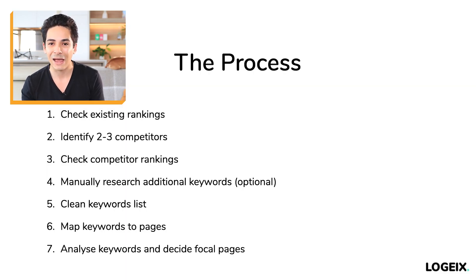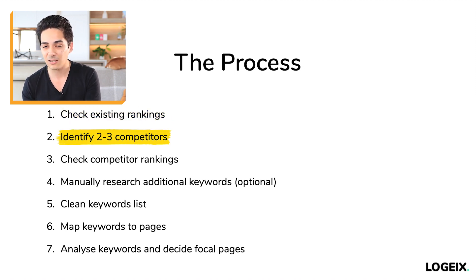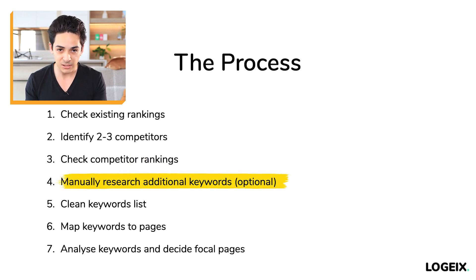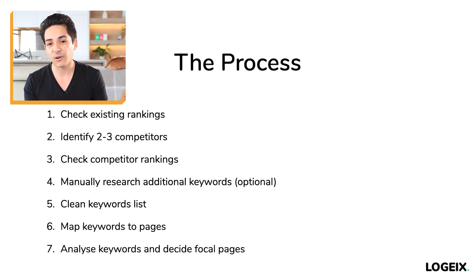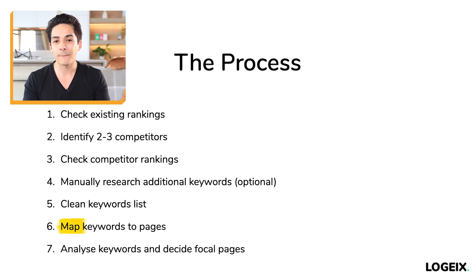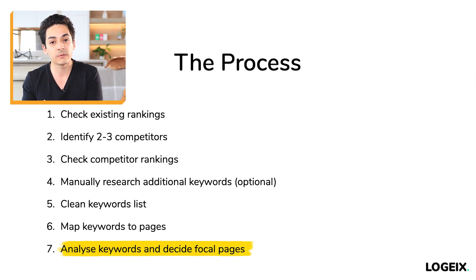The first thing I want to do is recap where exactly we're at. If you remember back to the seven-step process, so far we have: number one, we checked and downloaded our existing rankings. Number two, we identified two to three competitors. Number three, we checked those competitors' rankings and exported and downloaded that data. In step four, we optionally manually downloaded additional keywords via additional keyword research. In step five, we cleaned up that big list of keywords. In step six, we mapped that keyword list to pages. And in step seven, we analyzed those keywords and decided which ones we actually want to focus on.